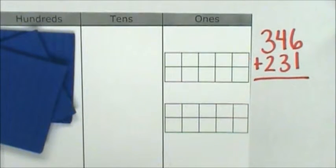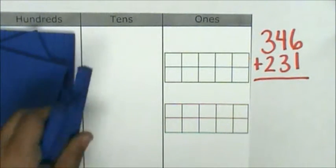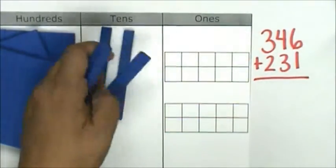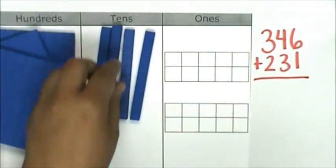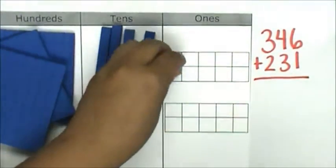Then, I will represent my tens: 10, 20, 30, 40. Now, my ones. I have 6 ones.